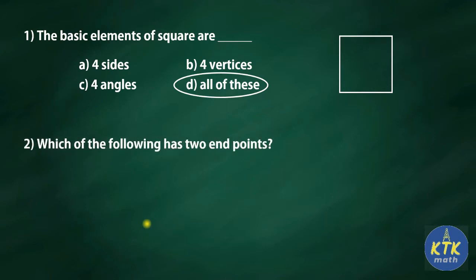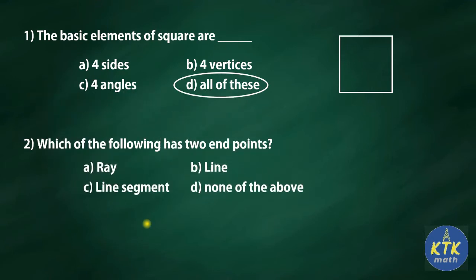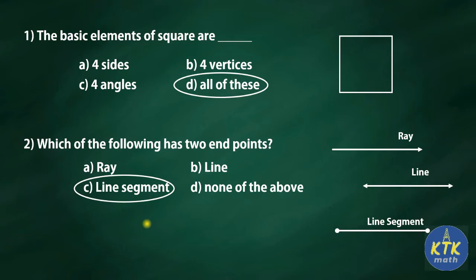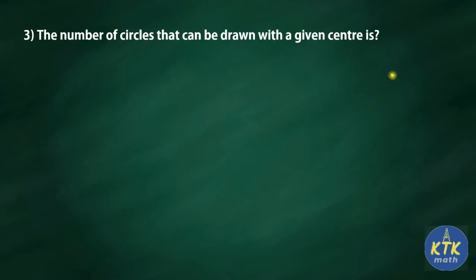Now we'll move on to the second question: which of the following has two endpoints? Options are: A — ray, B — line, C — line segment, D — none of the above. A ray has one endpoint and extends endlessly on the other side. A line extends endlessly on both sides. A line segment has two endpoints, so it is measurable. The correct answer for the second question is option C, line segment.